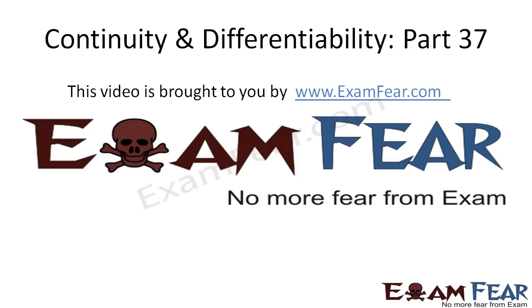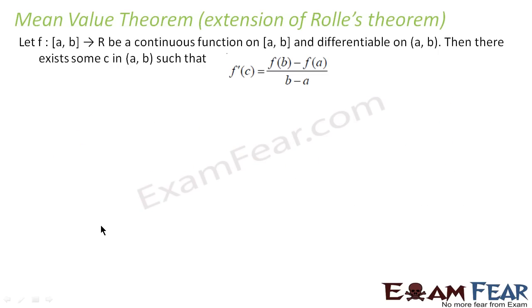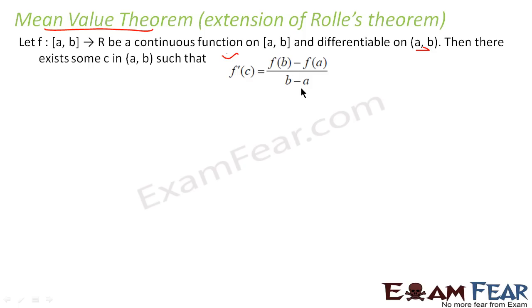Before watching this video, please make sure that you have watched part 36, which is called mean value theorem. Mean value theorem is nothing but an extension of Rolle's theorem. If you have a function from a to b, where the domain is a,b and range is R, it is continuous on [a,b] and differentiable on (a,b), then there exists c such that f'(c) = (f(b) - f(a)) / (b - a).